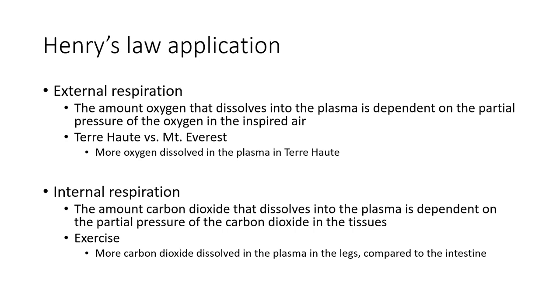We can do the same thing for internal respiration, but this time talking about CO2. So the amount of CO2 that's in your bloodstream is dependent on how much your tissues are producing. And so, for example, if you exercise, you're going to be producing more CO2 in your legs than you are in your intestines. And so the blood that's leaving your legs will have a high pressure of CO2 compared to that that's leaving your intestines. And with that, we'll end Dalton's Law and Henry's Law.